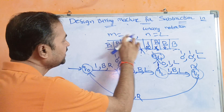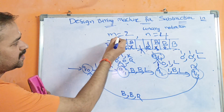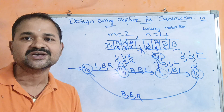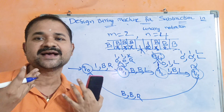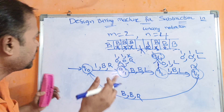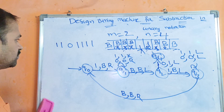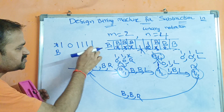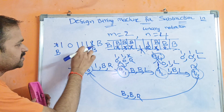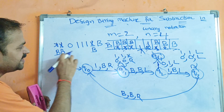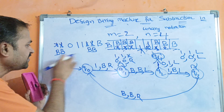Now let's see the second example where m equals 2 and n equals 4. Here m is less than n, so the result is zero — meaning all tape symbols should become blank. The input tape has two ones for m, a zero separator, then four ones for n. The first one is replaced by blank, and we proceed through the tape replacing symbols with blanks.